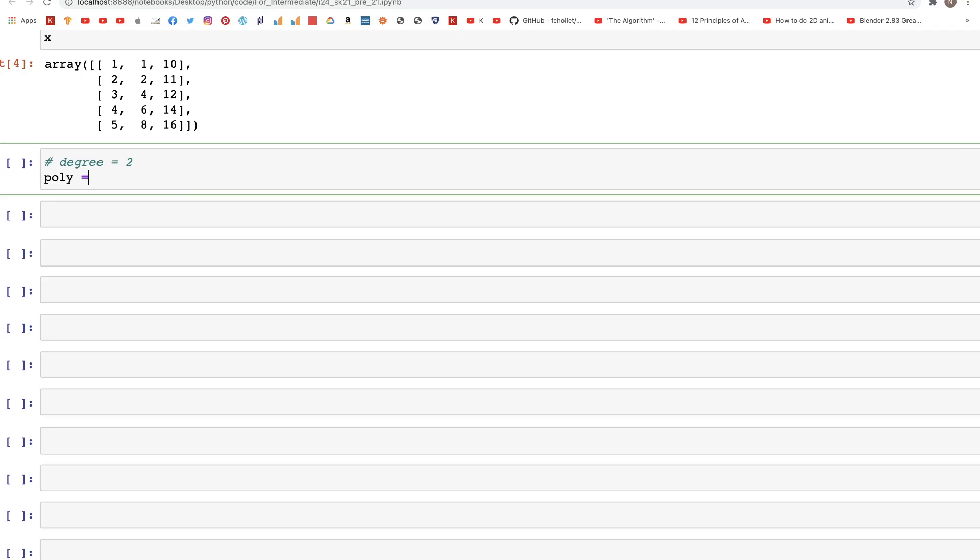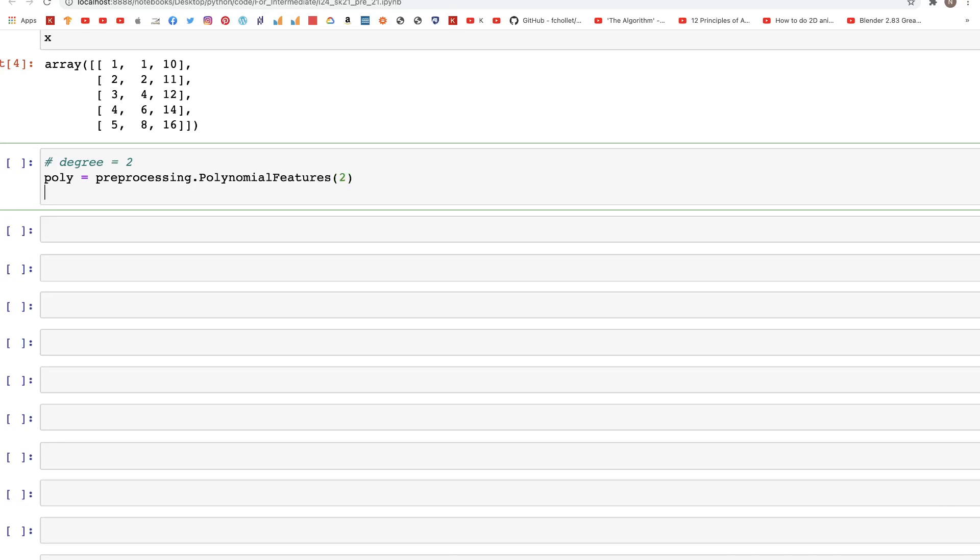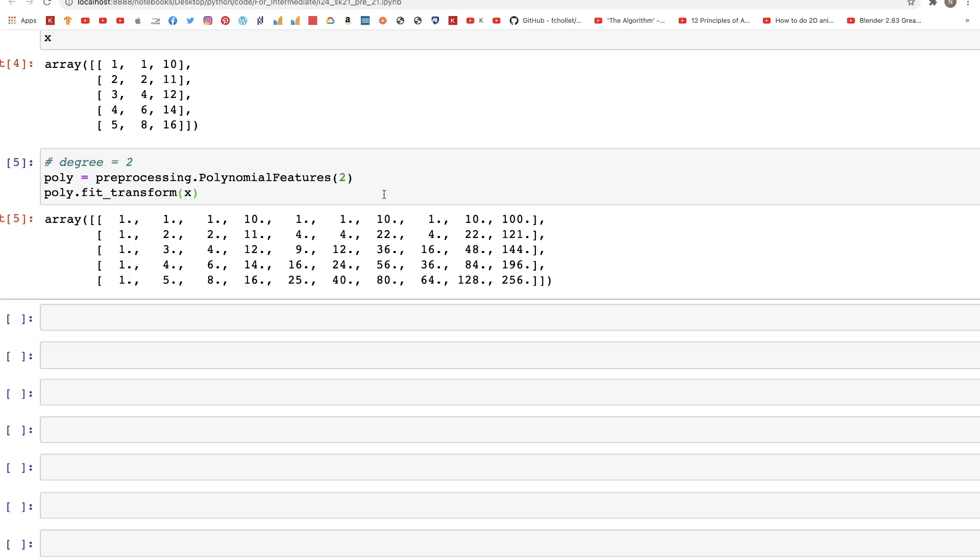So let's try that. Poly equals preprocessing.PolynomialFeatures. If we just specify two and then type poly.fit_transform, or we can do this in two lines, doesn't matter. Here as you can see we get everything in the output.